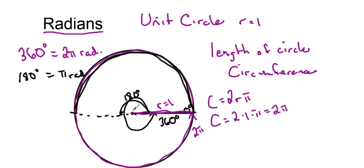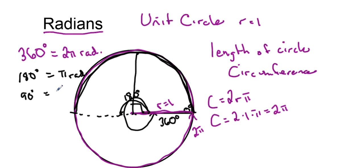If we wanted to say what is 90 degrees — so 90 degrees would be right here — 90 degrees is actually one-half of 180. So we would say that would be pi over 2 radians.